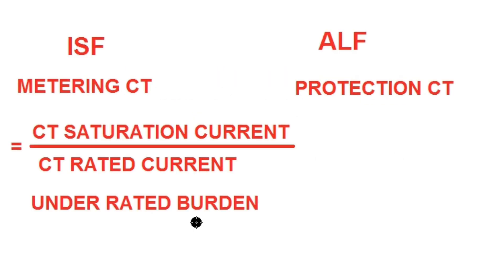Instrument Safety Factor is a parameter applicable for the metering class CT. Accuracy Limit Factor, that is ALF, is a parameter applicable for protection class CT. But the definition of both is the same — that is, the ratio of the CT saturation current to the CT rated current under rated burden condition.